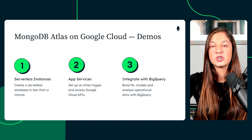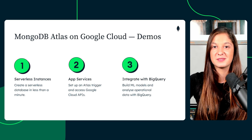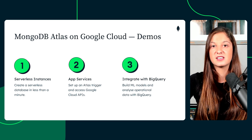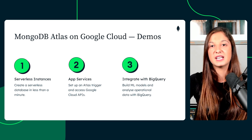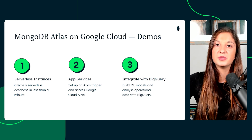So we've established what MongoDB Atlas is, but how can you start using it? The good news is that you can subscribe to Atlas right from the Google Cloud Marketplace. Let's look at three demonstrations of MongoDB Atlas on Google Cloud. In our first demo, I'll show you how to create a serverless database. In the second, you will learn how to perform sentiment analysis with Cloud Natural Language API and integrate that with Atlas functions. And finally, we will learn how to build a machine learning model on Atlas data with BigQuery.